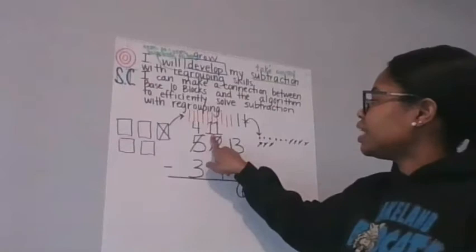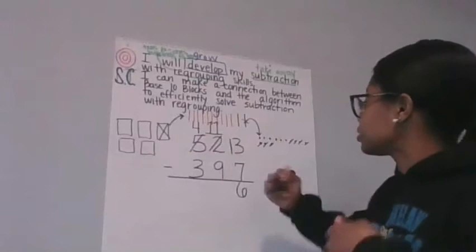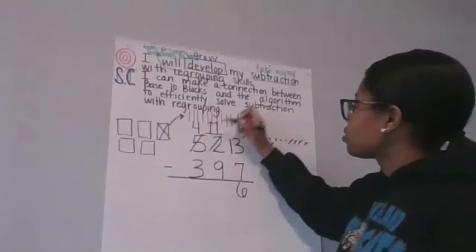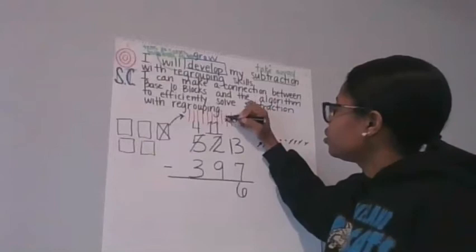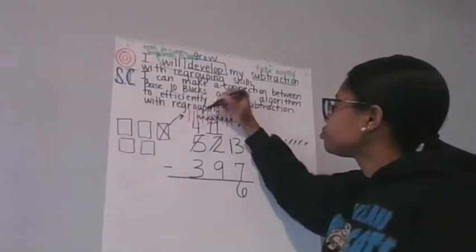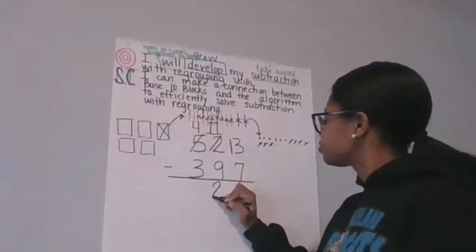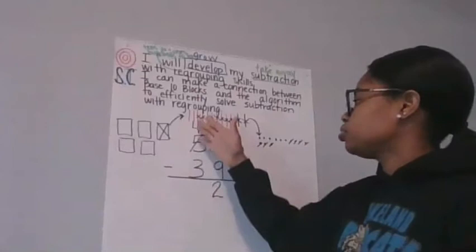So going back to my tens place, I have eleven minus nine. Eleven tens. I need to take away nine tens. Let's do it. I don't count this one because it's already been used. Next, I'm going to take away nine tens. One, two, three, four, five, six, seven, eight, nine. I have two tens left.